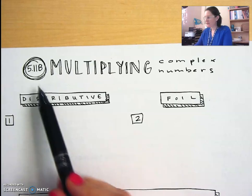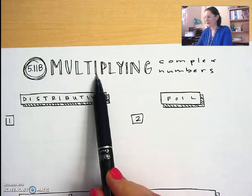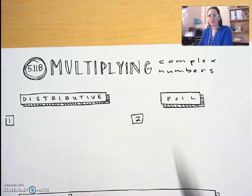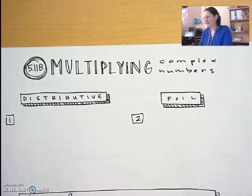Alright, here's our video for 5.11b multiplying complex numbers. We're going to set up this lesson just like we did radicals in the last unit.